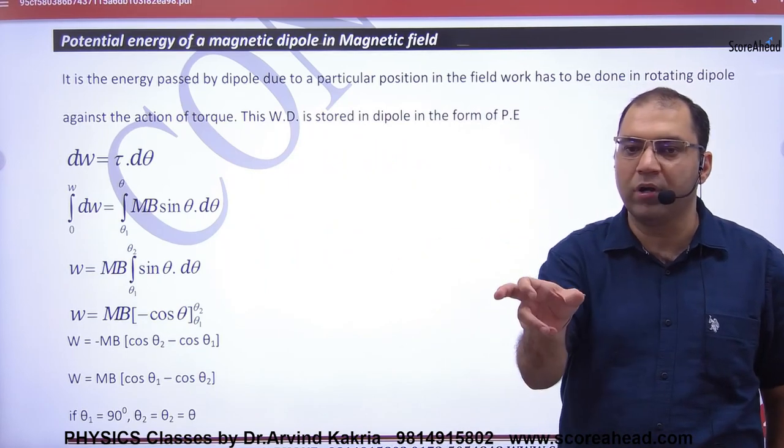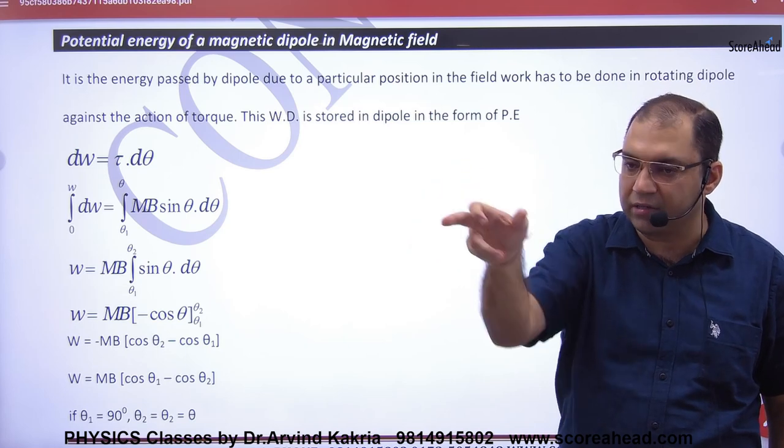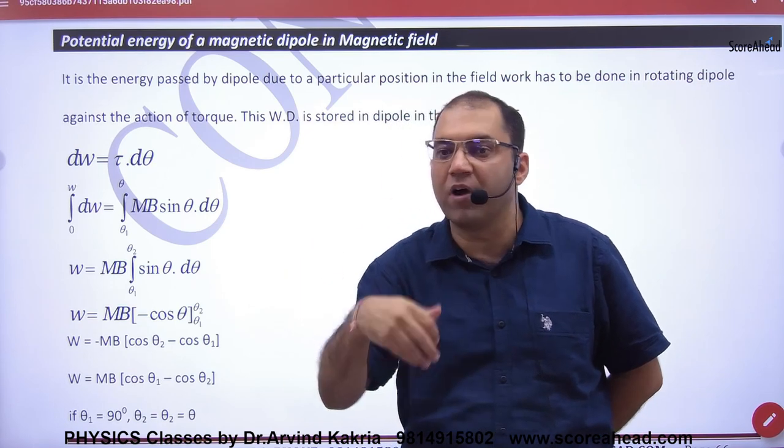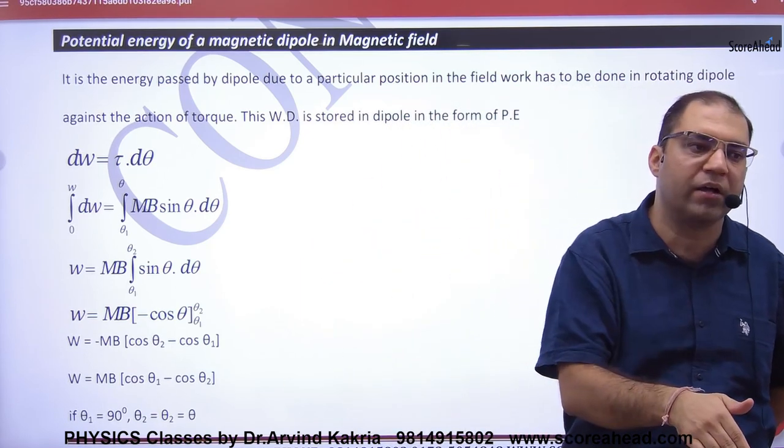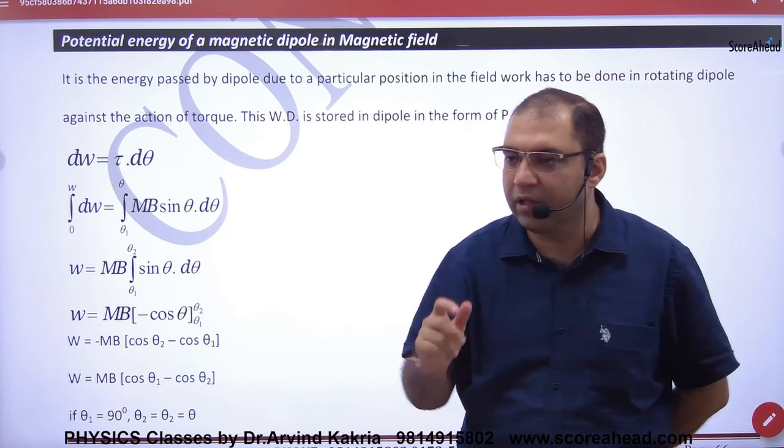If you have a dipole in equilibrium position, you have to do work. Similarly, if you have a magnet, you have to rotate it in the magnetic field, then you have to do work. It will be stored in the magnetic dipole in the form of potential energy.